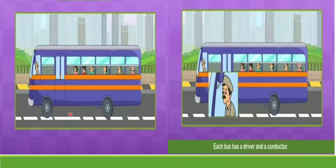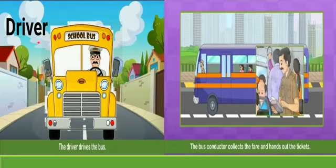What are you seeing in this picture? It's a bus, and each bus has a driver and a conductor. What does the driver do? The driver drives the bus. And the bus conductor collects the fare and hands out the ticket. So wherever we want to go, we take a bus. The driver and conductor are our helpers — they help us go wherever we want.